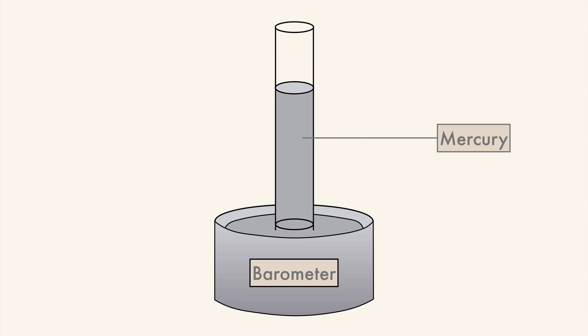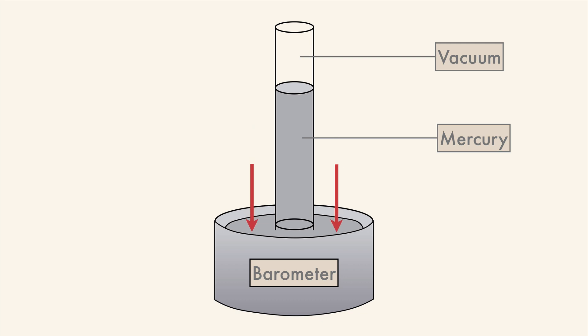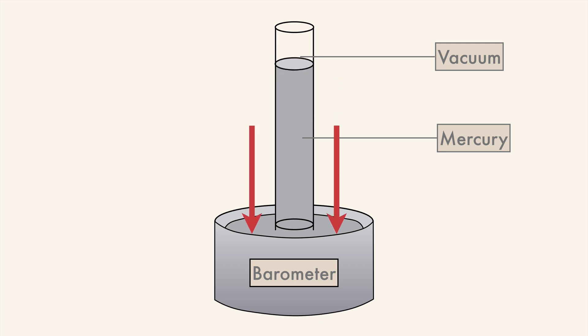At the top of the barometer is a vacuum, and the atmospheric pressure — all the atmosphere from Earth's crust to space — is pressing down on the liquid in the basin. When the atmospheric pressure rises, the mercury adjusts to the increasing pressure by moving up the tube, creating equilibrium between the internal and external pressures. When the atmospheric pressure decreases, the mercury level drops to maintain equal pressure.